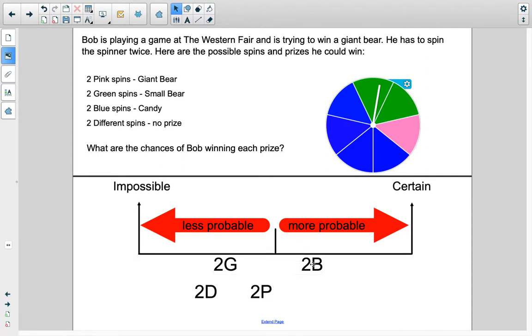In fact, I would even move the blue a little this way. Two pink is absolutely pretty rare. It's going to be down here. It's not impossible, but it's not likely. And two different is going to be probably somewhere around the two blue, maybe a little bit more probable, but not much. So this is sort of how I would use this line to determine Bob's likelihood of winning.